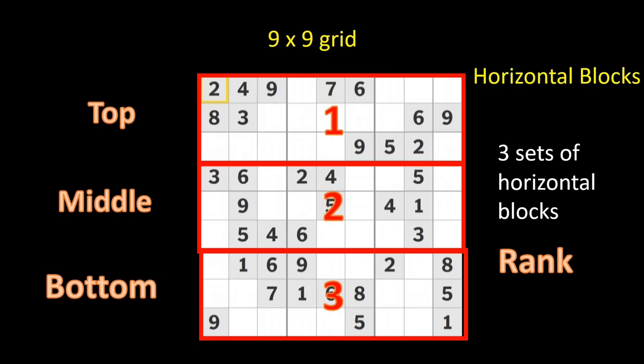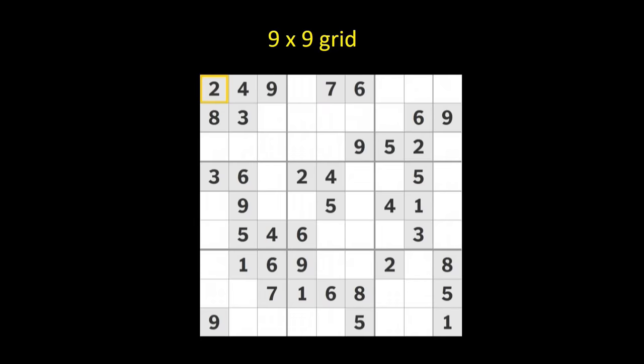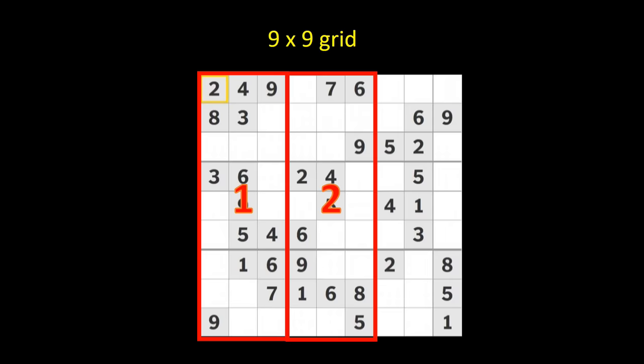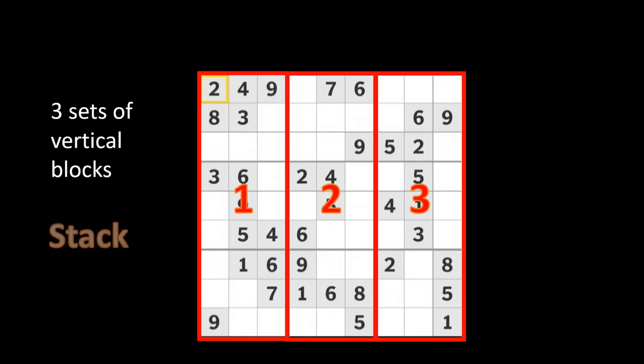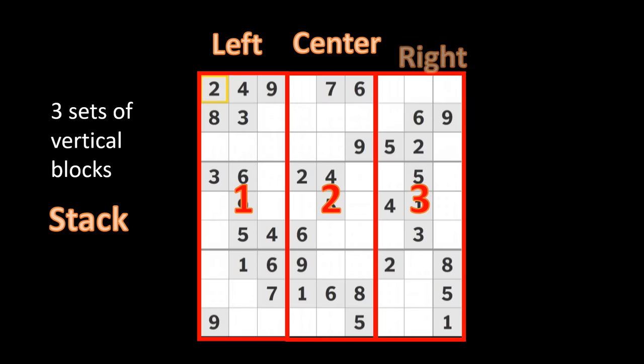We can also look at the same nine by nine group in terms of vertical blocks. Here you can see the blocks marked off vertically, that is going down in three groups of vertical blocks. One, two, three. A set of three vertical blocks is called a stack. Here we have the left stack, the center stack, and the right stack.